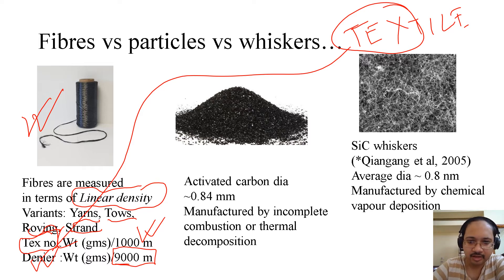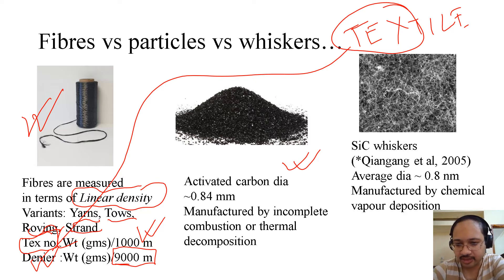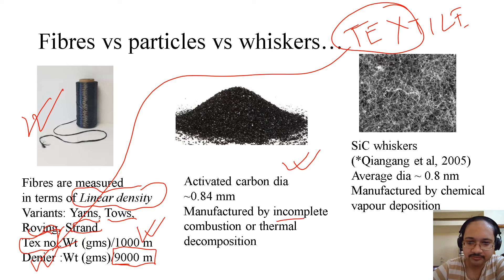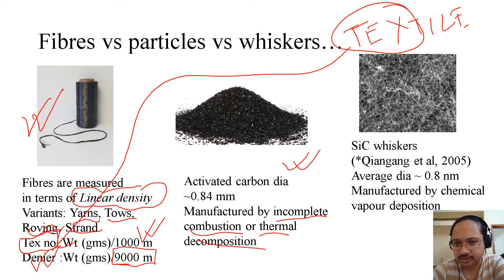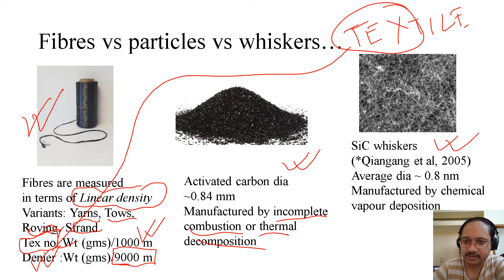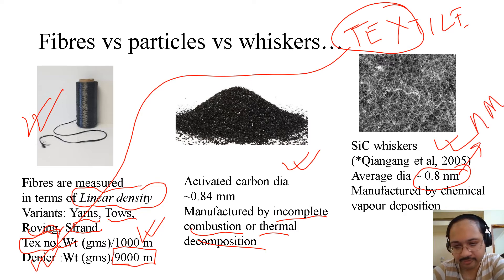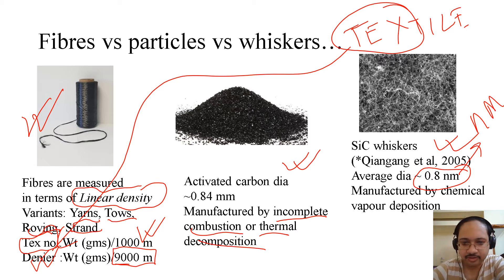For carbon particles, activated carbon has a diameter of 0.84 millimeters. It is manufactured by incomplete combustion and thermal decomposition. In the case of silicon carbide whiskers, the average diameter is 0.8 nanometers — so don't forget, it's not 0.8 millimeters, it's 0.8 nanometers — and it is manufactured by CVD, or chemical vapor deposition.